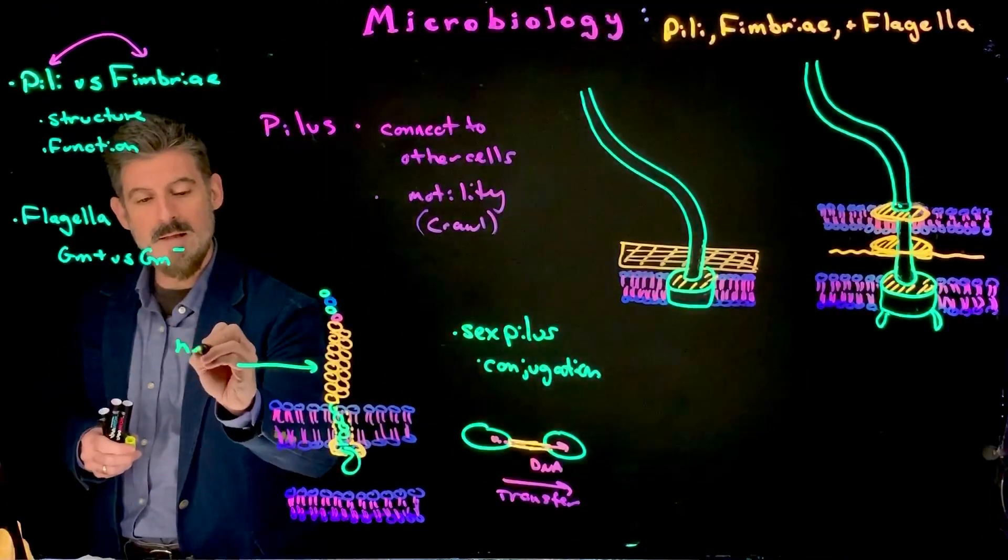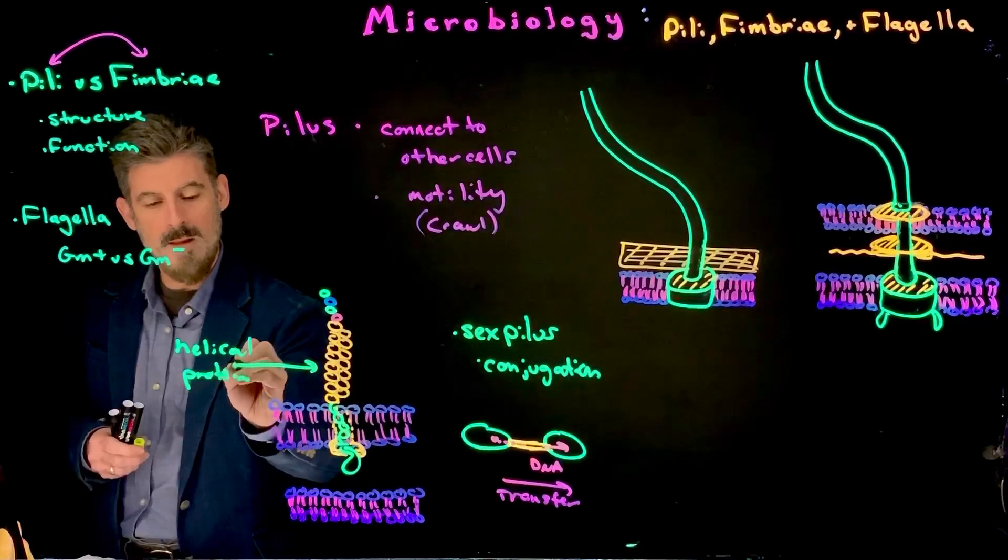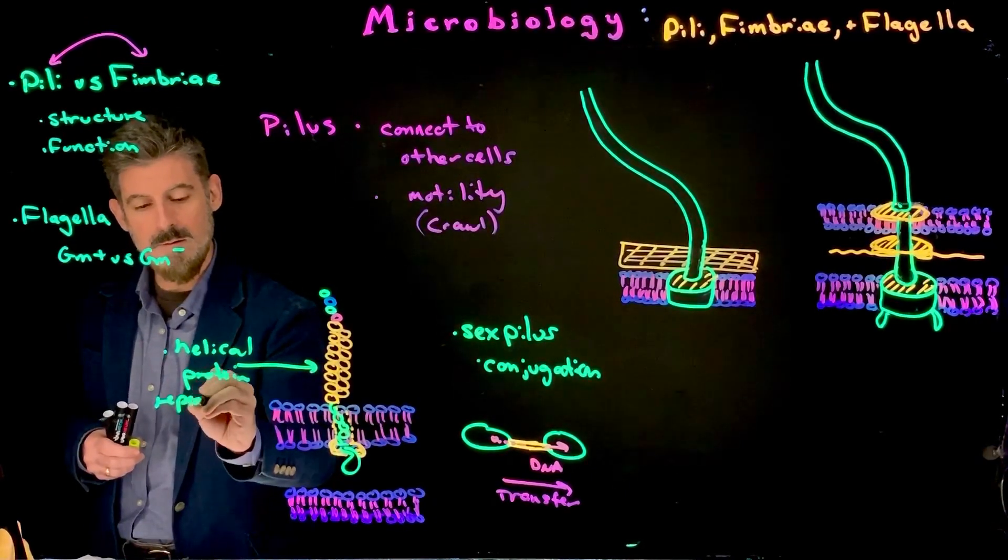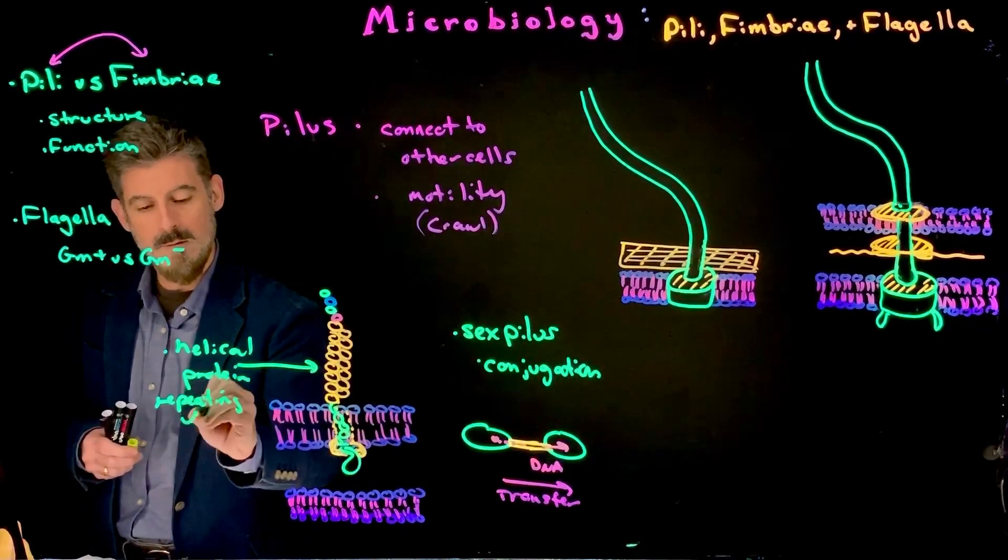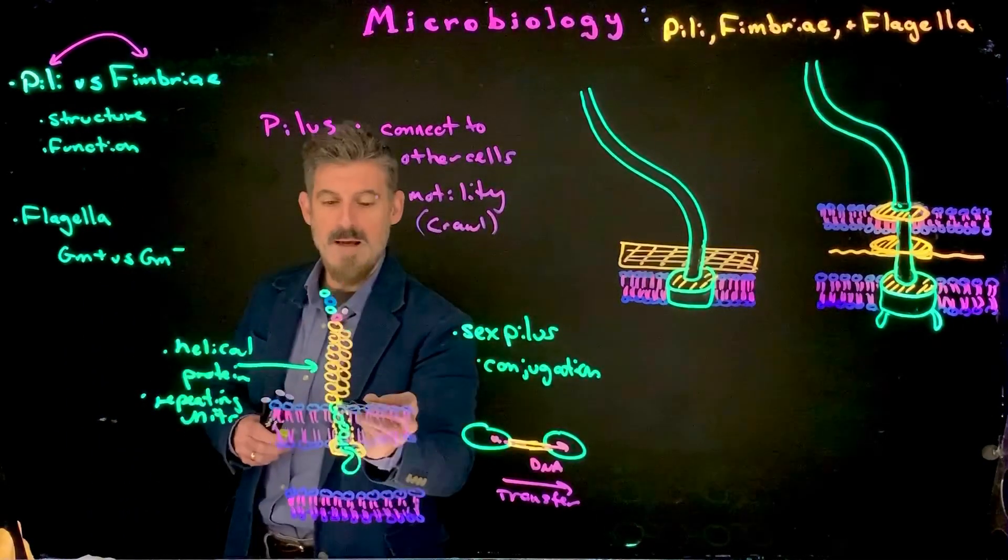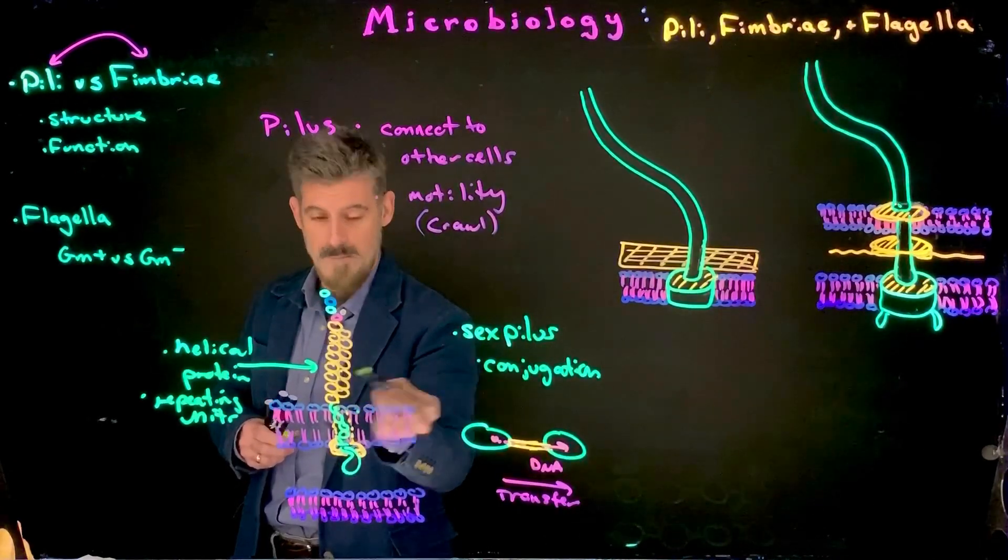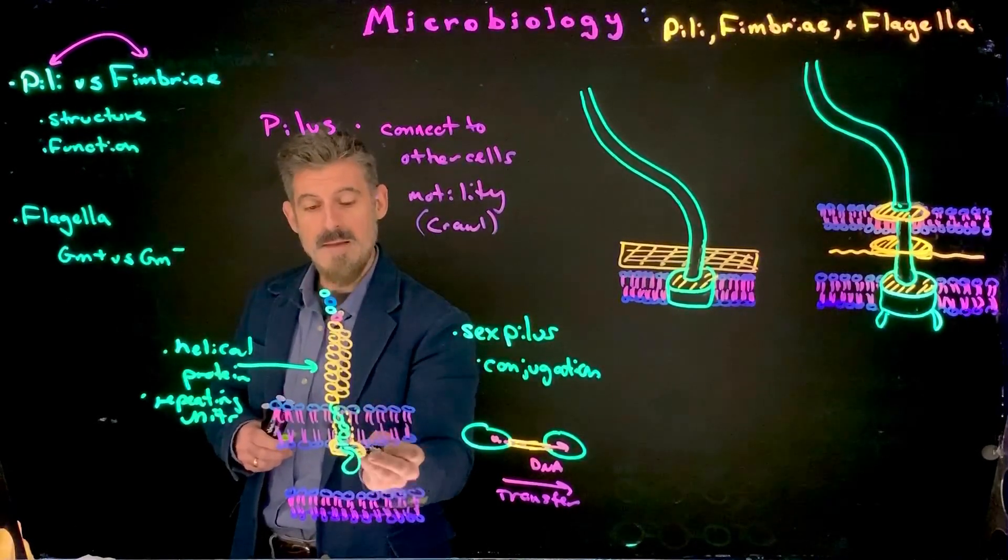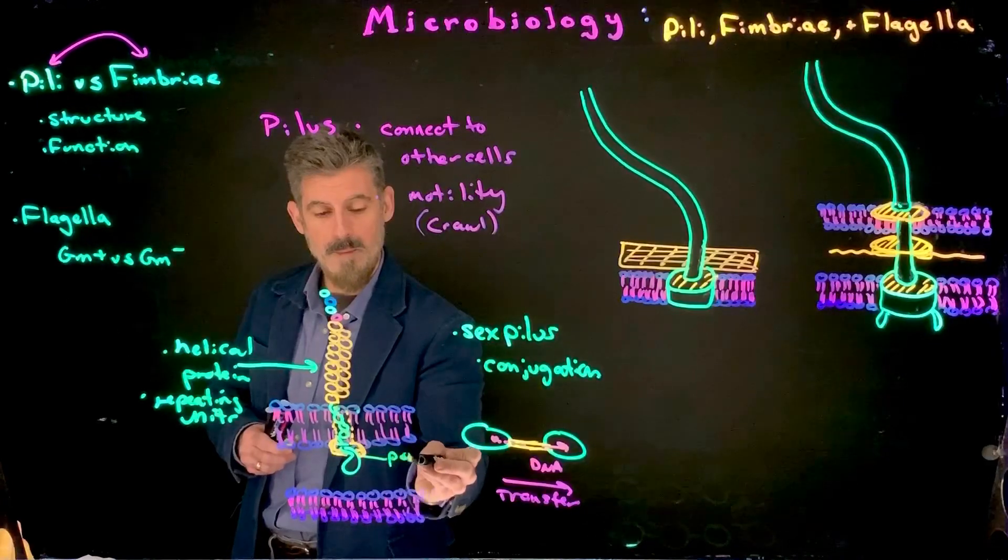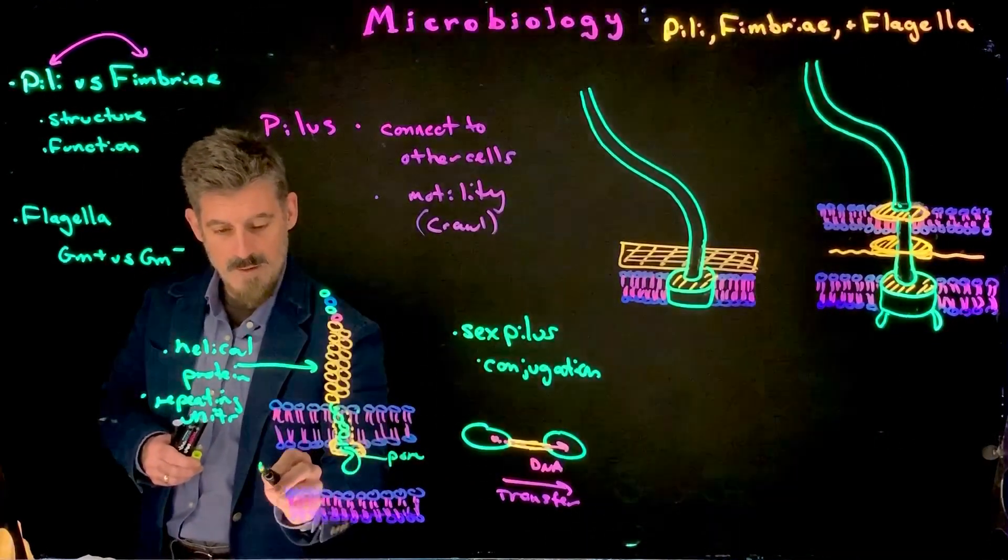regardless of whether it's pilus or fimbriae, we see sort of a helical protein structure of repeating units. Like you can see here, proteins are repeating. It's anchored to the outer cell membrane, outer cell wall part here. And then typically, there's a pore that can open up part of this, then, to the periplasm.